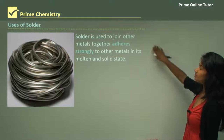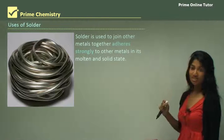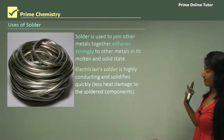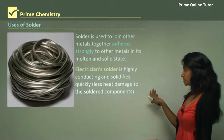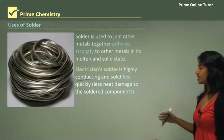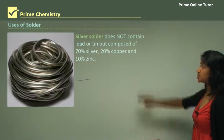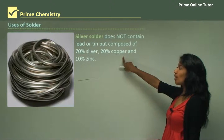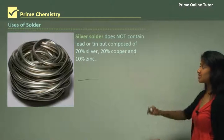Solder is used to join metals together. It adheres strongly to other metals in both molten and solid state, so because of its adhering properties, it is used to join metals together. There are two types of solder. One is electrician solder, which is highly conducting and solidifies quickly, meaning less heat damage. The second is silver solder, which does not contain any lead or tin but has silver, copper, and zinc — 70% silver, 20% copper, and 10% zinc.